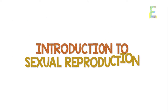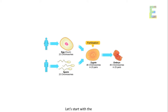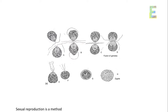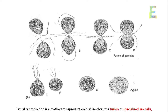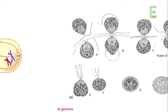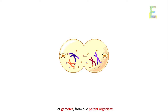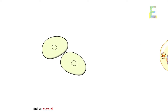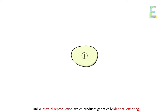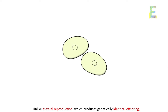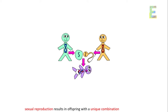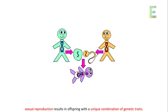Introduction to sexual reproduction — let's start with the basics. Sexual reproduction is a method of reproduction that involves the fusion of specialized sex cells, or gametes, from two parent organisms. Unlike asexual reproduction, which produces genetically identical offspring, sexual reproduction results in offspring with a unique combination of genetic traits.